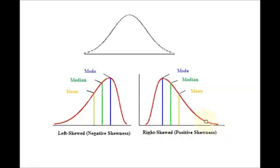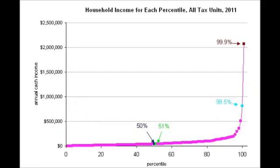This is also called positive skewness because the tail is on the positive end of the number line. And this one over here is negatively skewed because the tail is tending towards the negative on the number line.